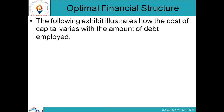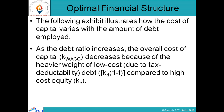The following exhibit illustrates how the cost of capital varies with the amount of debt implied. As the debt ratio increases, the overall cost of capital — WACC, or weighted average cost of capital — decreases because of the heavier weight of low-cost, tax-deductible debt KD(1−T) compared to high cost of equity KE.